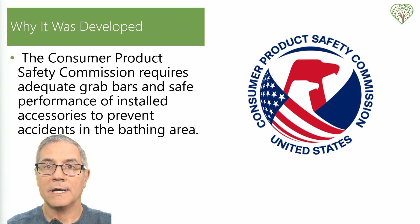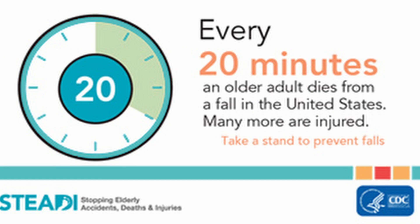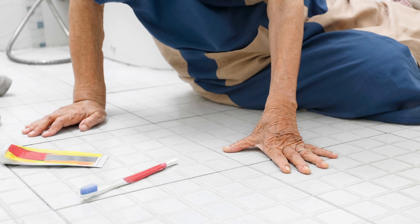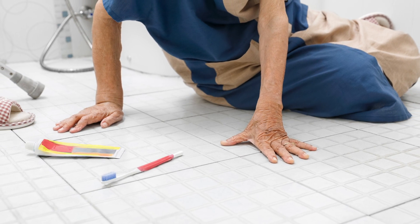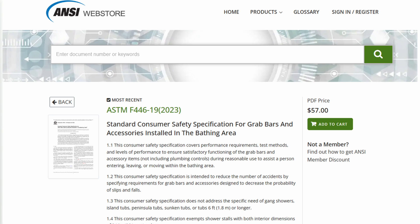So why was a Structural Strength Grab Bar Test created? The Consumer Safety Commission had done a lot of data analysis — they got it from the CDC. They found that there were a lot of falls in the bathroom area, whether it was through transfers, getting in and out of showers, or getting up from a commode. They wanted to make sure that there were safety specifications on fasteners, grab bars, and accessories in the bathing areas.